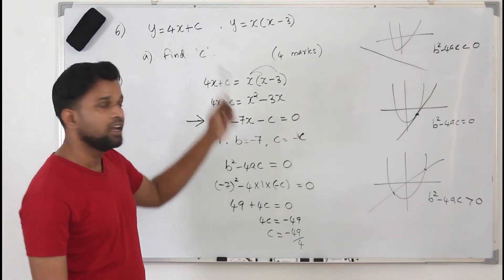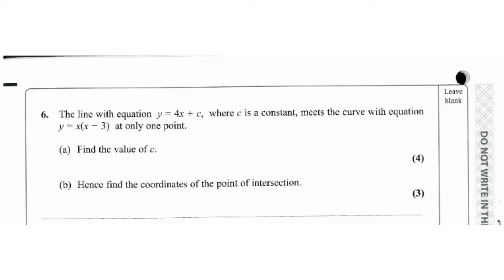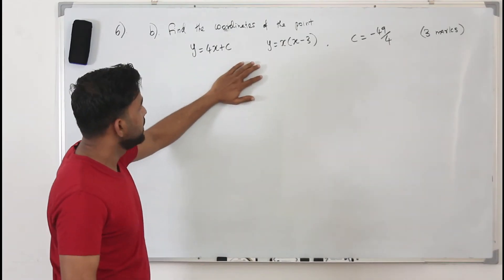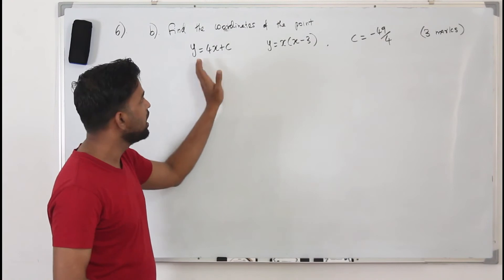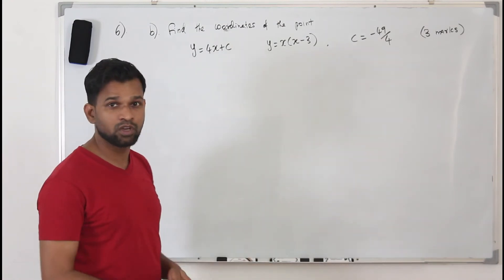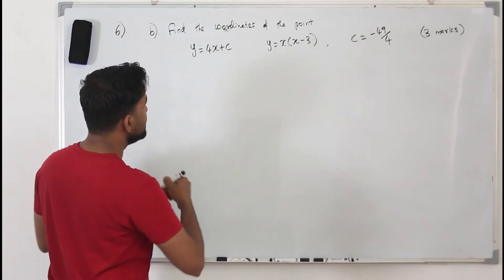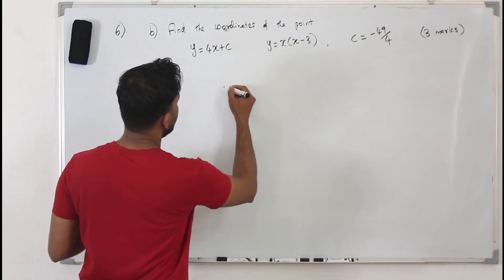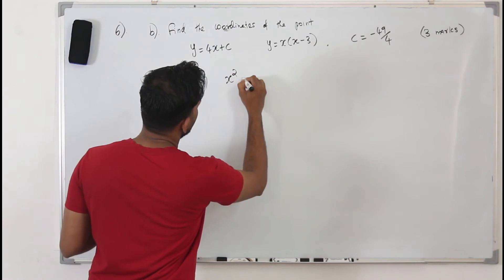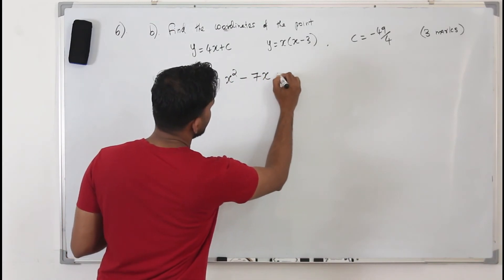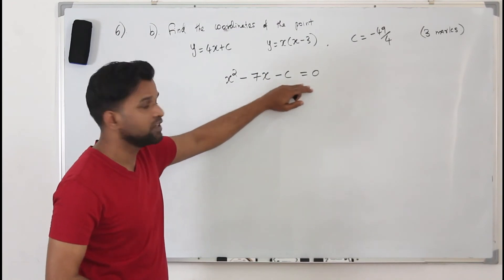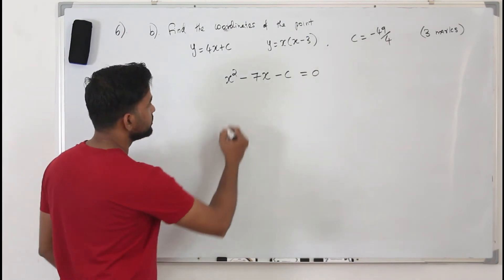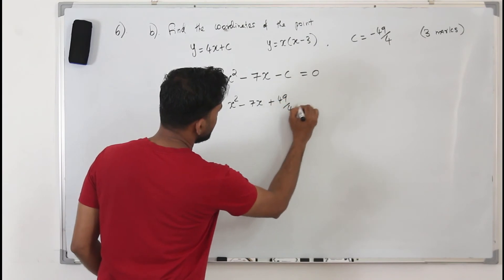For part B, worth three marks, we need to find the coordinates of the point where the line touches the parabola. We substitute c equals minus 49 over 4 into the quadratic from part A: x squared minus 7x minus c equals 0, which becomes x squared minus 7x plus 49 over 4 equals 0. Multiplying everything by 4 to remove the fraction gives 4x squared minus 28x plus 49 equals 0.